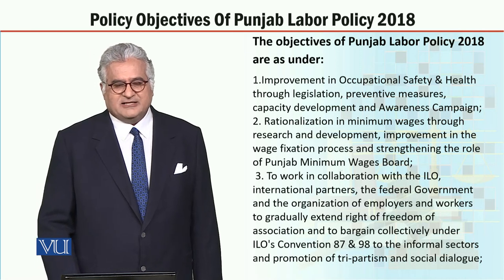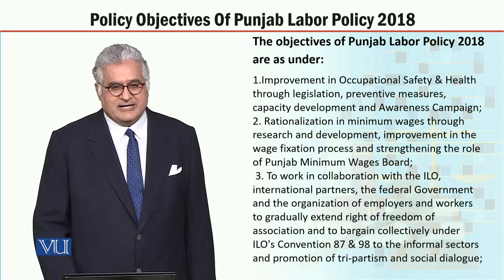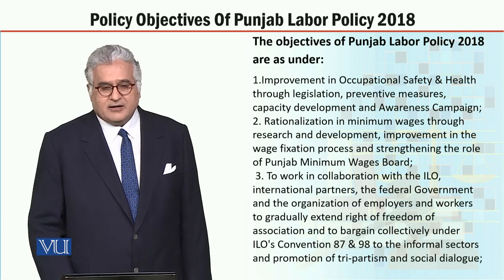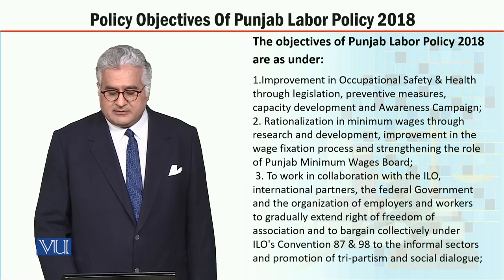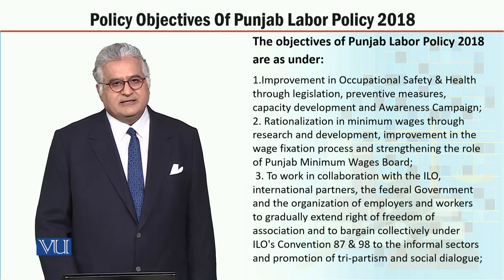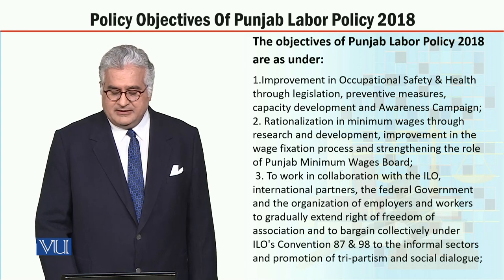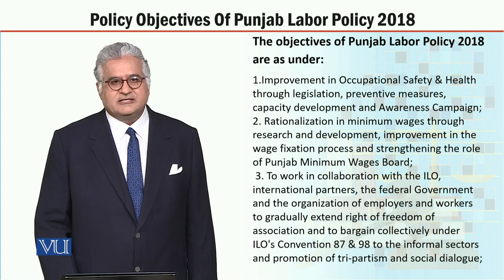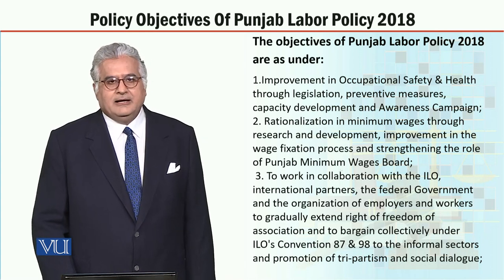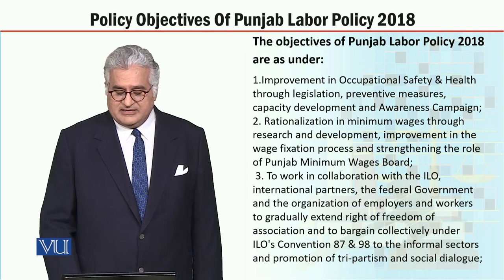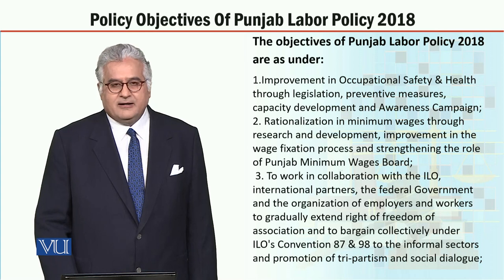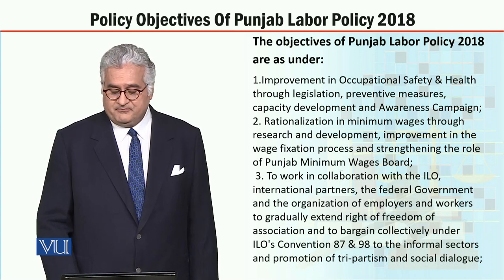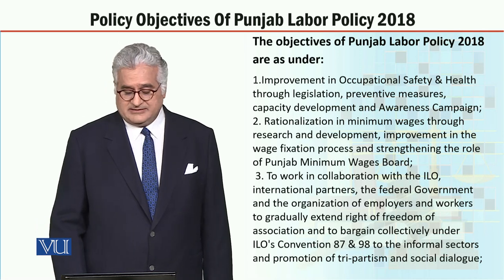The third policy objective of the Punjab Labor Policy 2018 is to work in collaboration with ILO, international partners, the federal government, and the organization of employers and workers to gradually extend the right of freedom of association and to bargain collectively under ILO's Convention 87 and 98 to the informal sectors, and promotion of tripartism and social dialogue.